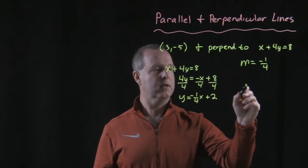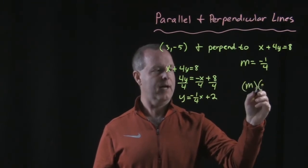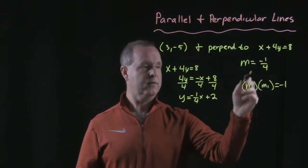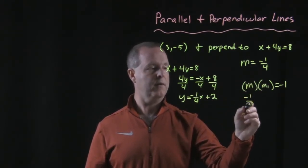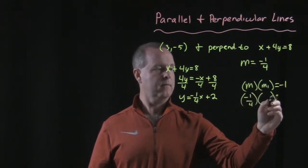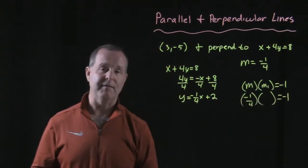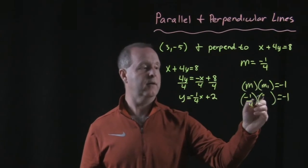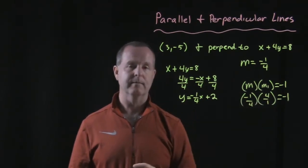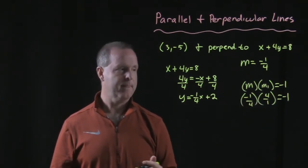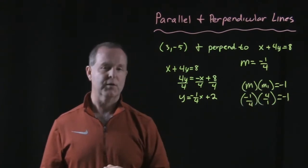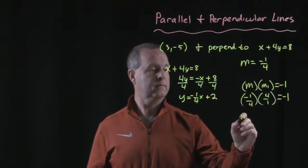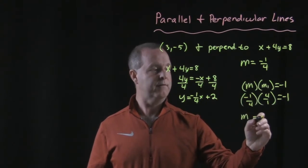Remember that m times the slope of the other one equals -1. So if one slope is -¼, what does the other one have to be for that to be true? Well, it's the negative reciprocal. So it's 4 over 1, or just 4. So now I have the slope that I'm looking for equals 4.